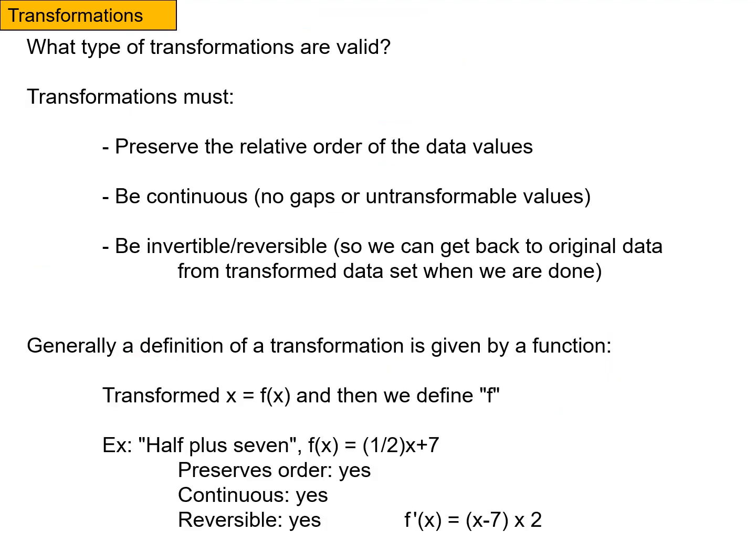So what kinds of transformations are valid? Any transformation is valid if it preserves the relative order of data values. So if you have three values, A, B, and C, and they're transformed, if B is in between A and C, then the transformed value of B has to be between the transformed value of A and the transformed value of C.